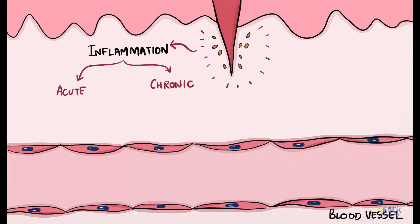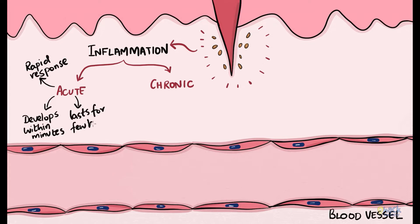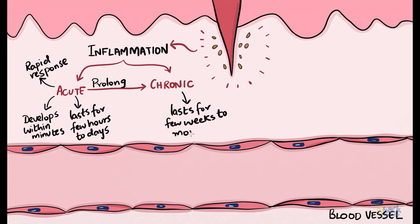Acute inflammation is a rapid response developing within minutes and could last up to a few hours to a few days. But if the insult or damage is not repaired by the acute response, the inflammatory response could become prolonged, thus becoming chronic. Chronic inflammation could go on for a few weeks to many months.